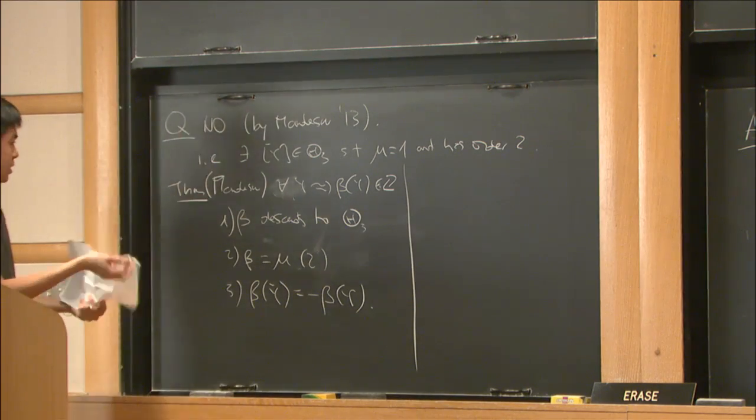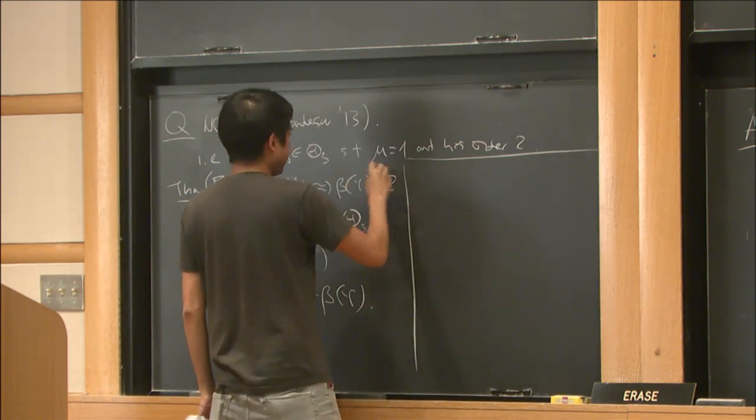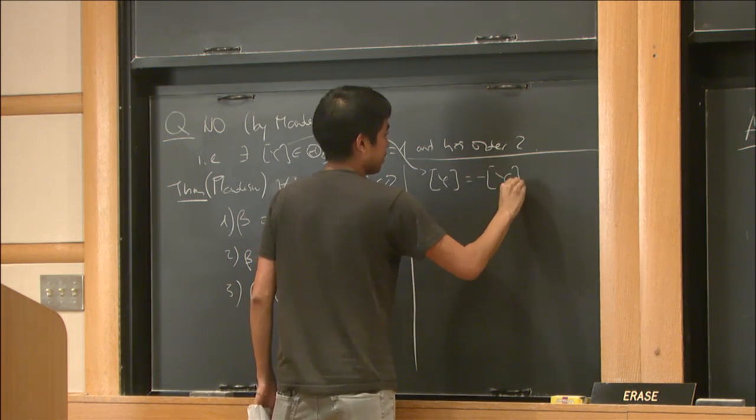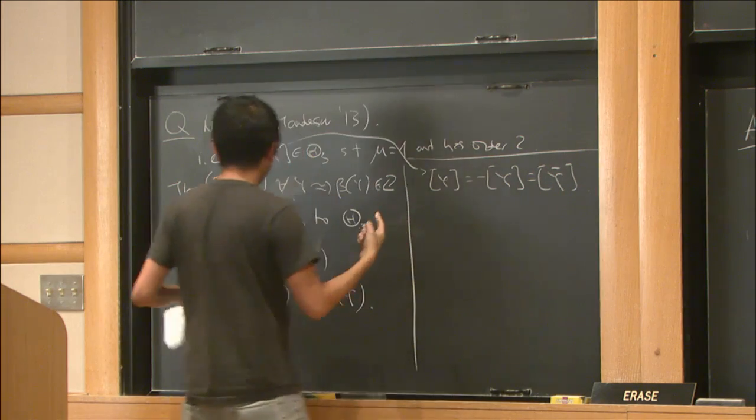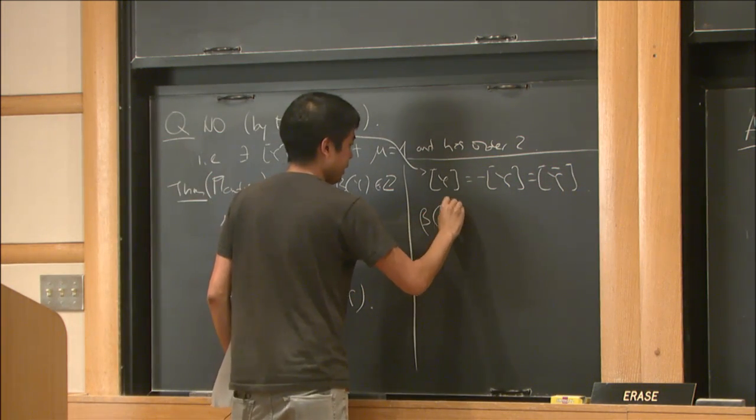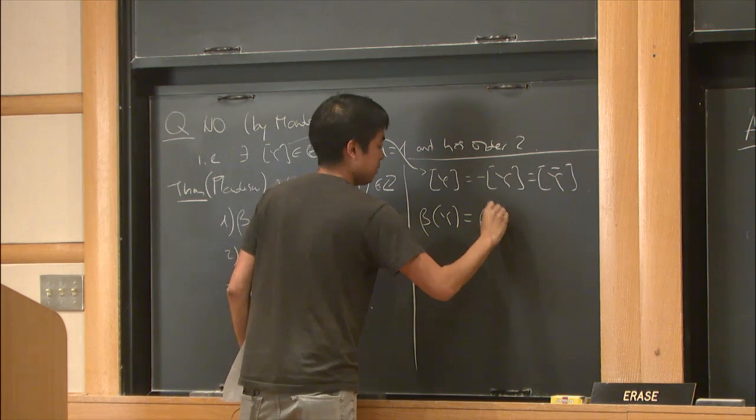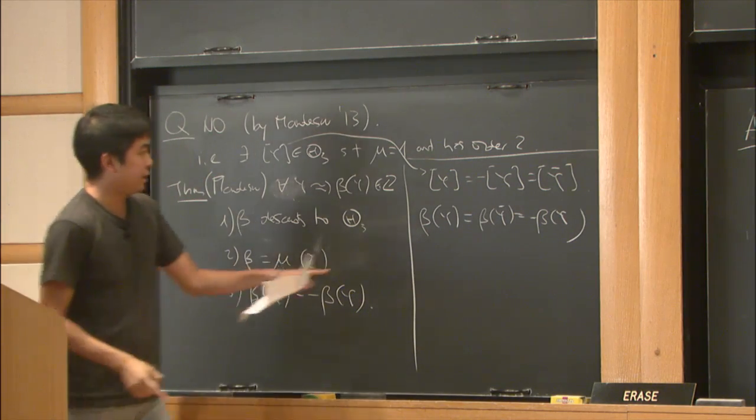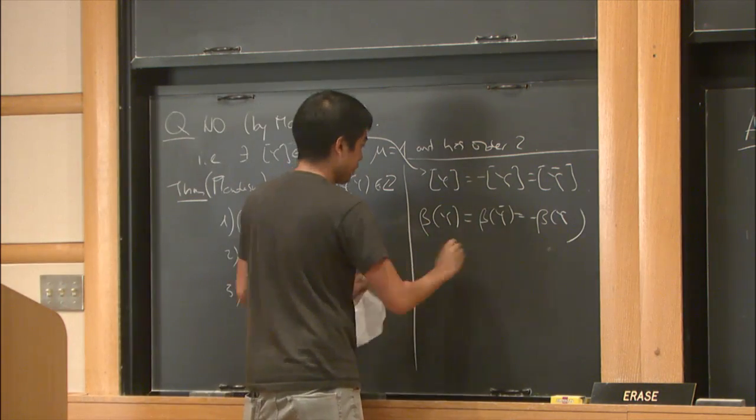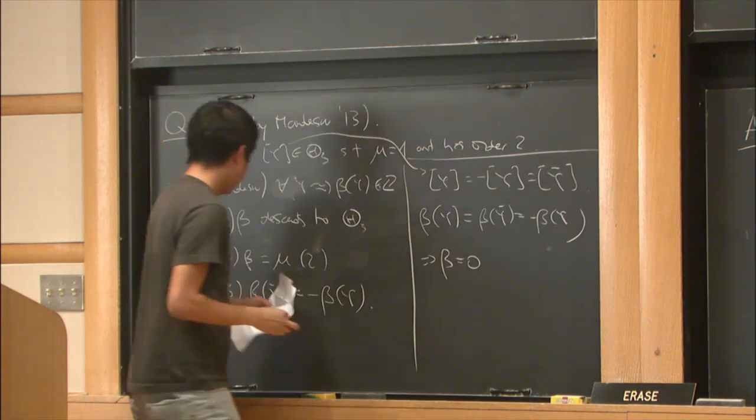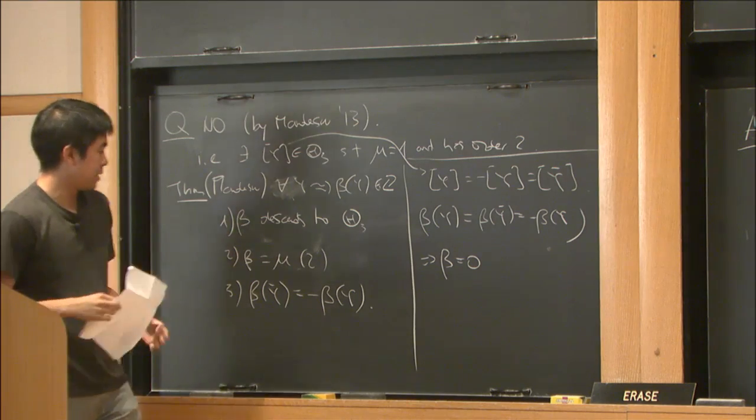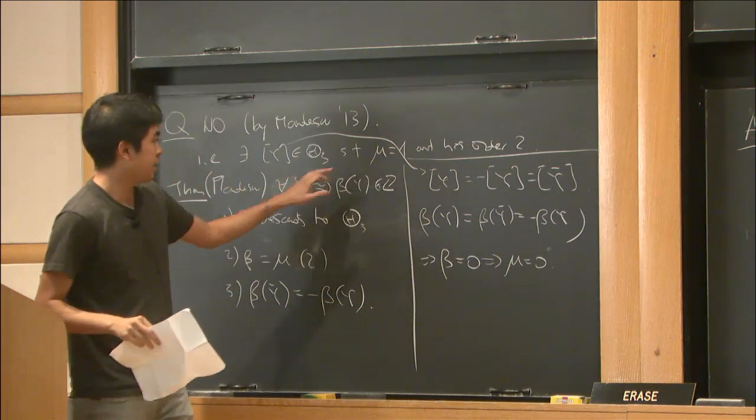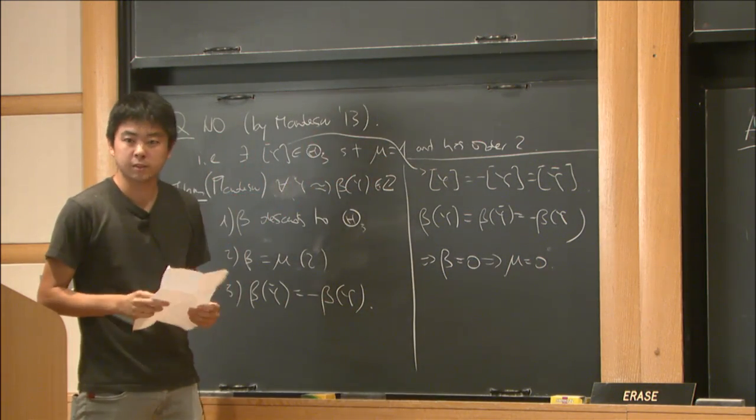How does this imply the result? This is just basic algebra. If you have an element of order 2, then the class of Y is the same as the class of Y bar. So if you apply β, you get that β of Y is the same as β of Y bar, which is minus β of Y because of property 3. But this is an integer, so if β equals minus β, then β equals 0. And property 2 implies that μ is also 0. So if you have an element of order 2, it necessarily has μ equals 0, and that homomorphism doesn't split.